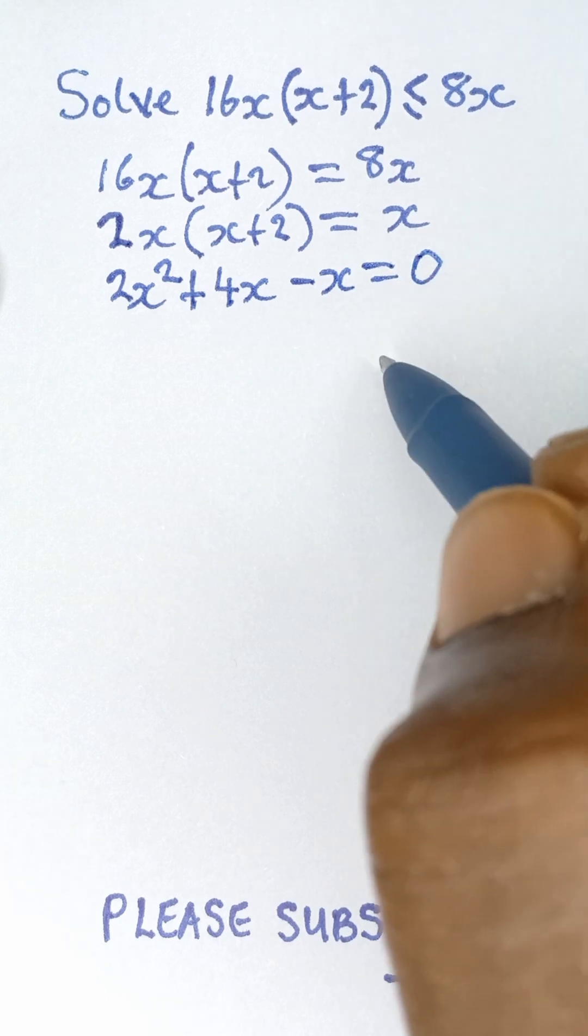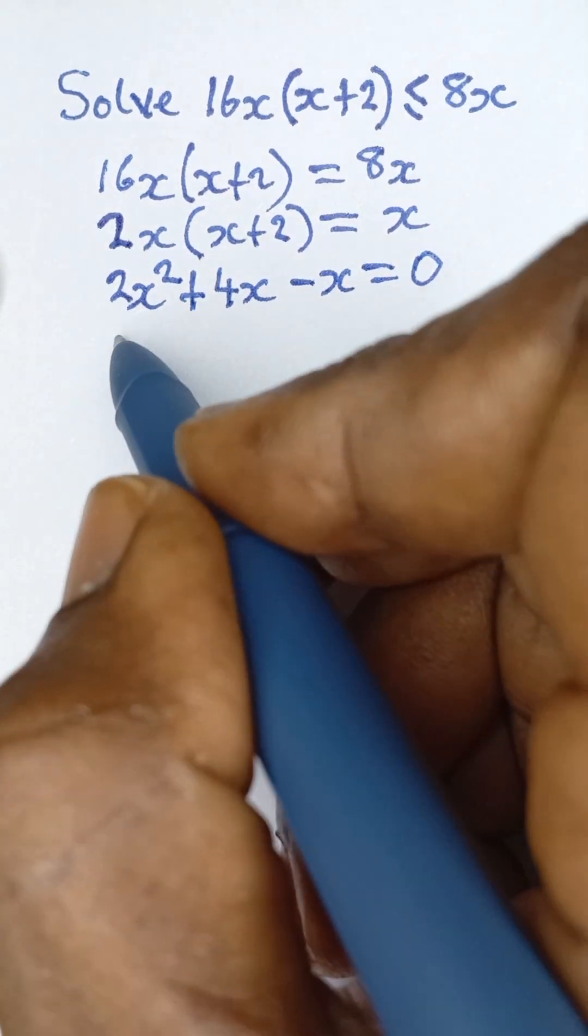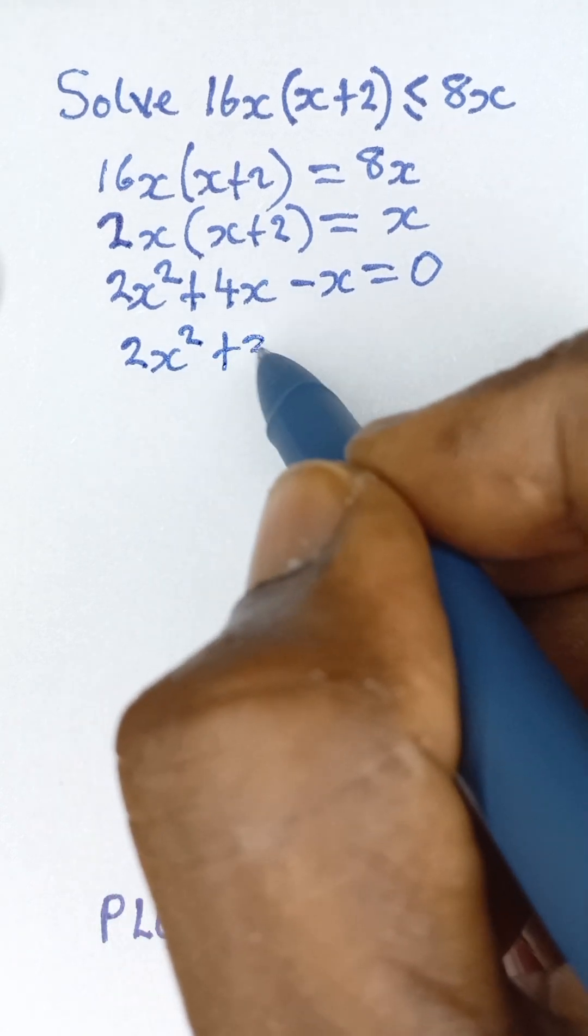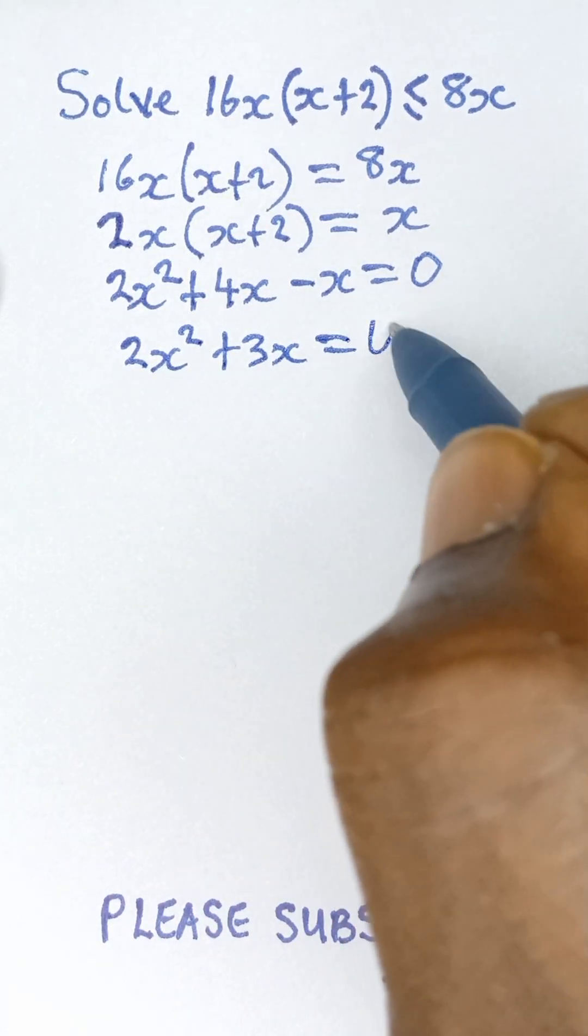This gives me a quadratic equation where I have 2x² + 3x = 0.